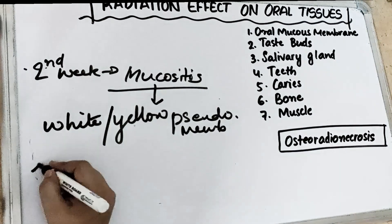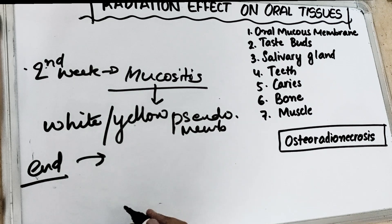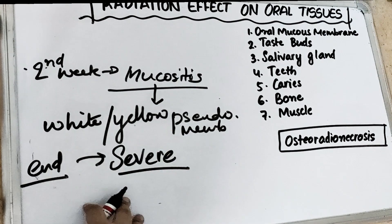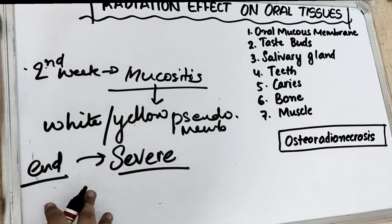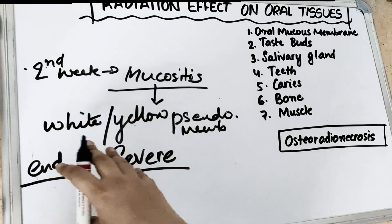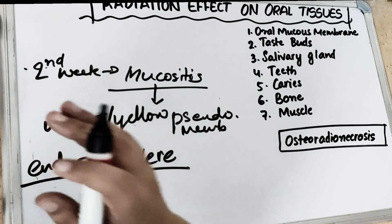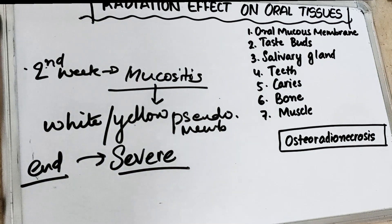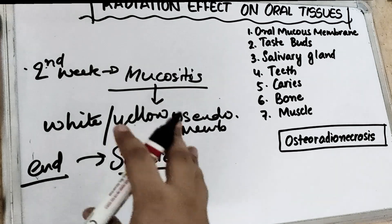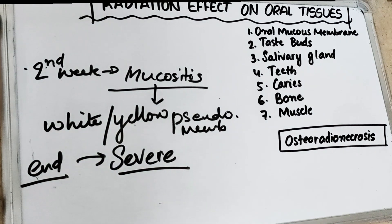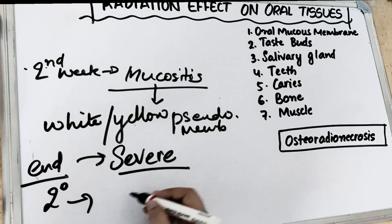When radiation therapy ends, the patient's mucositis is now severe and there is maximum discomfort. The patient must maintain good oral hygiene. By the end of radiation therapy, patients are often unable to eat and may need topical anesthetics during meals. There can also be secondary infection with Candida albicans.